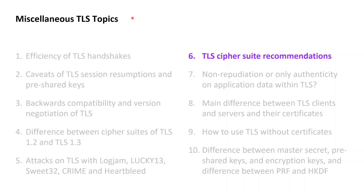With the previous five lessons having covered various significant attacks on TLS, we now have a good understanding of security vulnerabilities associated with specific TLS versions and specific ciphers used. In this lesson, the security vulnerabilities uncovered by the LOCKJAM, LUCKY13, and SWEET32 attacks are consolidated into a set of recommendations on which cipher suites to use within which TLS version.